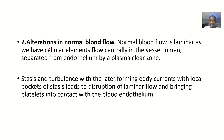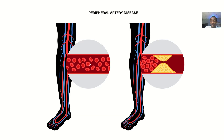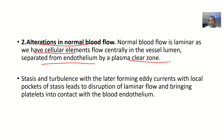The next cause could be alteration in the normal blood flow. Normal blood flow is laminar, with cellular elements flowing centrally in the blood vessel, separately from the endothelium — they are flowing centrally in the vessel lumen, separated from the endothelium. This separation is known as the plasma-clear zone. Stasis and turbulence, by forming eddy currents with pockets of stasis, disrupt this normal laminar flow and bring platelets into contact with the blood vessel endothelium.